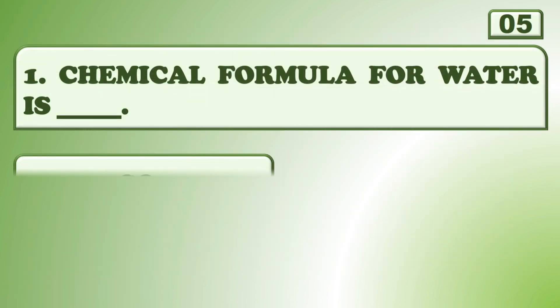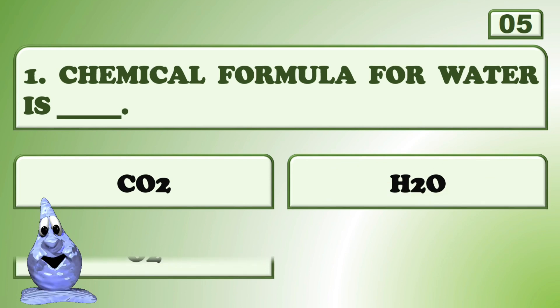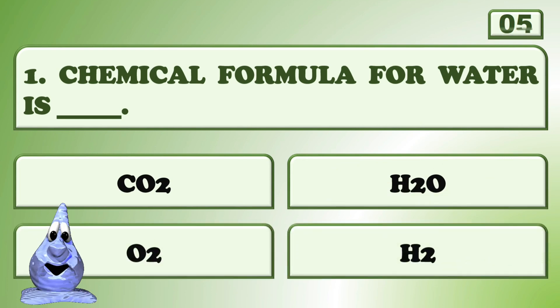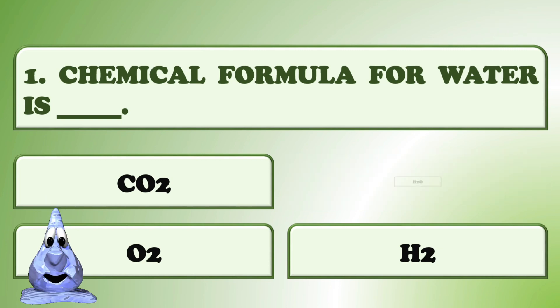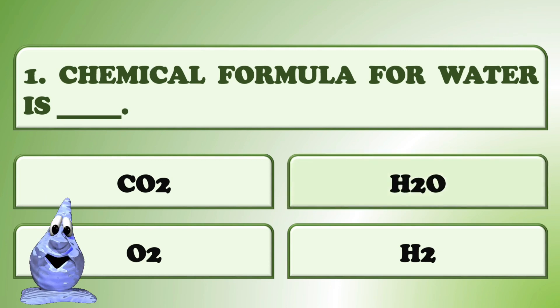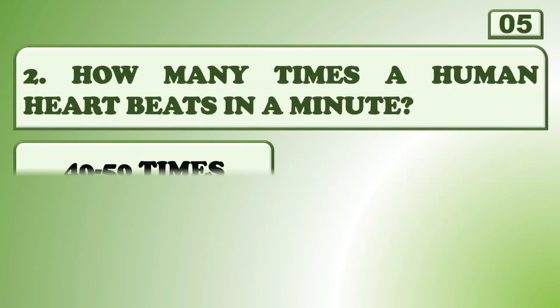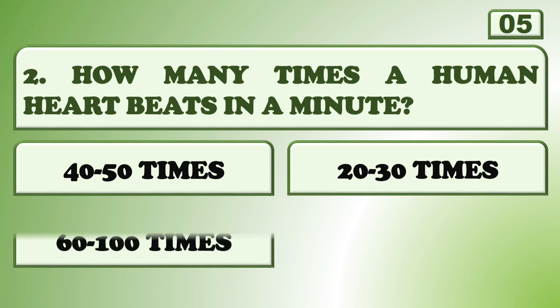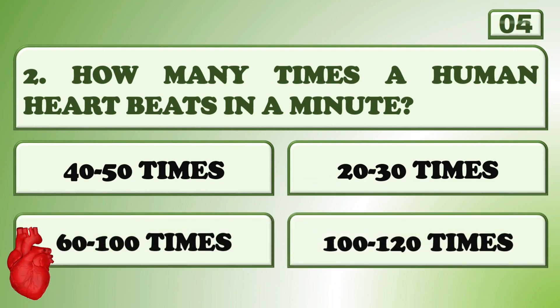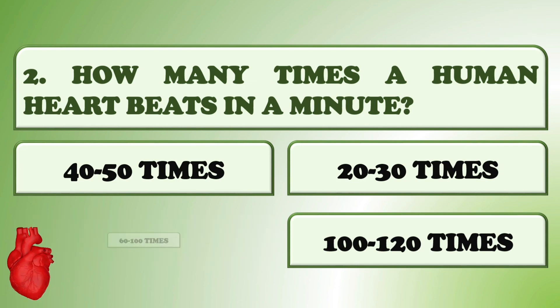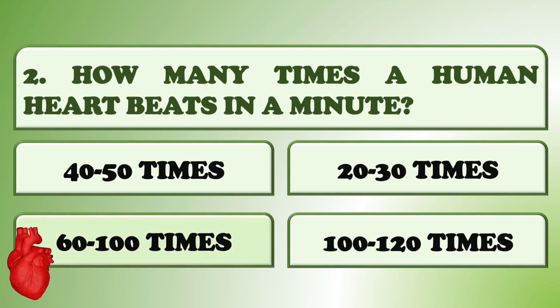Please share your scores and comments and don't forget to click on the subscribe button. The chemical formula for water is... How many times does a human heart beat in a minute? 6200 times!